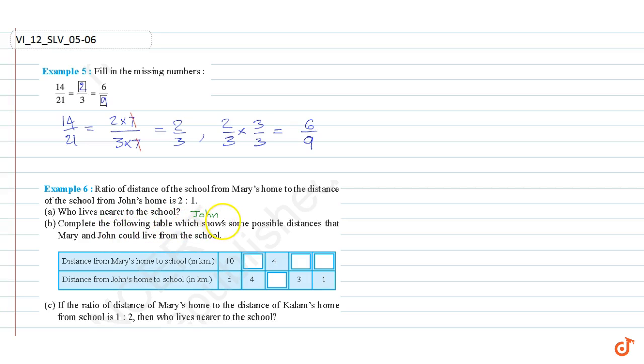Complete the following table which shows some possible distances that Mary and John could live from the school. Since the ratio is 2 is to 1, here it is 10 is to 5 that is 2 is to 1. Since the ratio is 2 is to 1 here it should be 8. 8 is to 4 is 2 is to 1. Here it is 4. So 4 is to 2 is 2 is to 1.